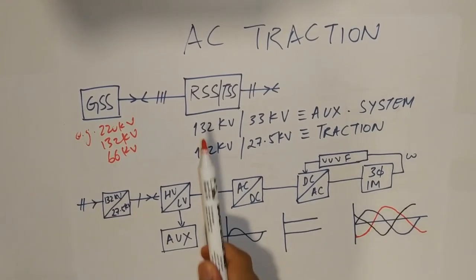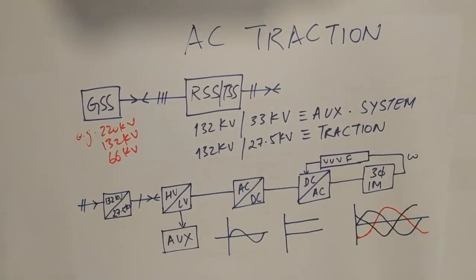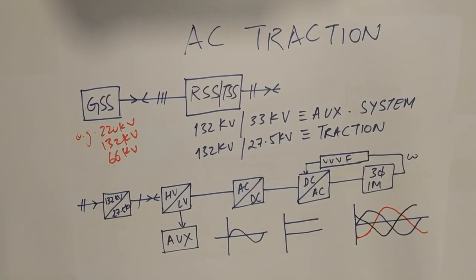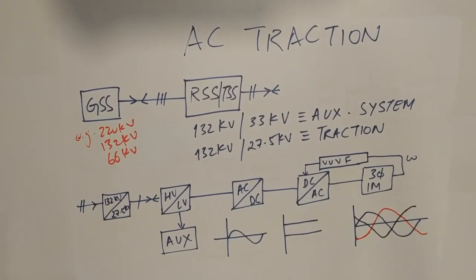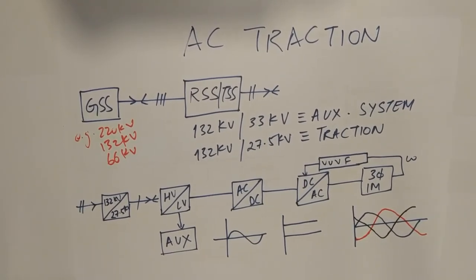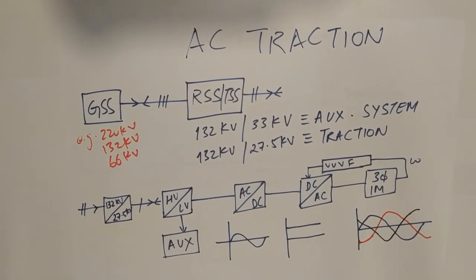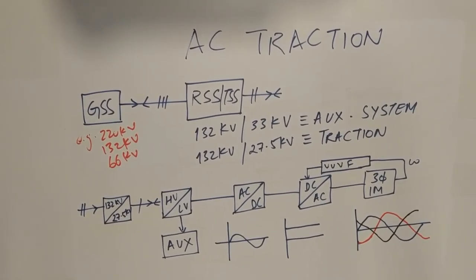Now, in RSS, once the supply comes, it is divided into two. First, the part goes into the auxiliary system which is for station lighting, signaling, comm and other supplies. And the other one is used for traction.